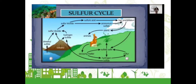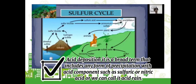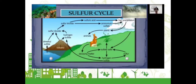By adding sulfur compounds to the air, the use of fossil fuels increases the rate of acid deposition. Acid deposition is a broad term that includes any form of precipitation with acid components, such as sulfuric and nitric acid — also called acid rain. All living organisms require sulfur to make proteins. Plants get sulfur by taking up ions of sulfate salts from the soil. Animals also get sulfur by consuming plants. All living things release sulfur compounds when they decay or decompose.